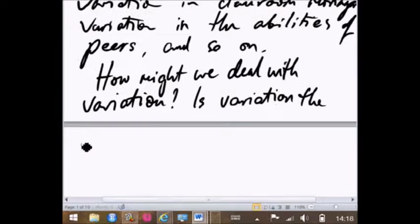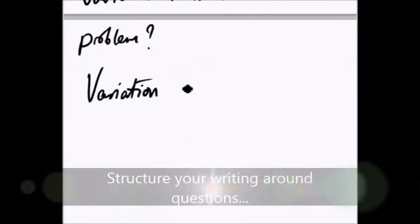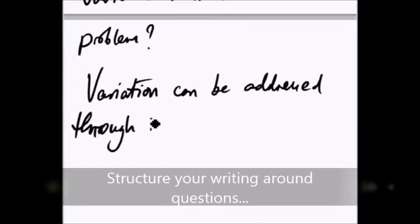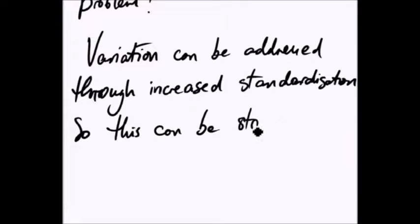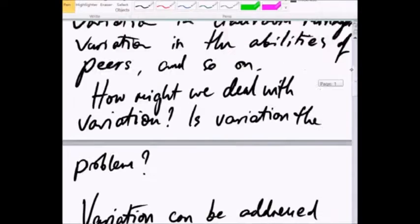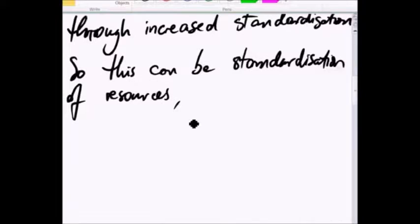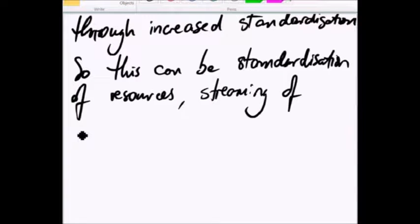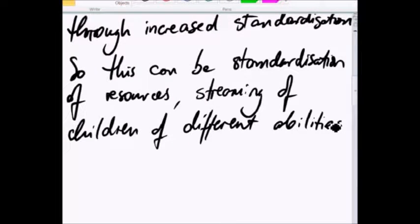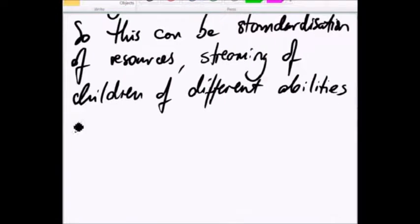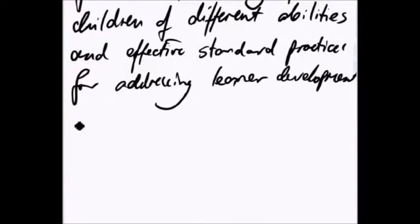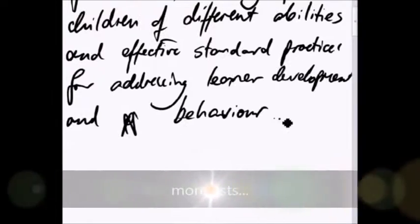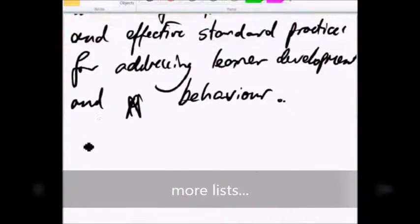Okay, so we've got another question now. I've got more to write. How can we deal with the variation problem? Variations can be addressed through increased standardization. Yes. So I know I can now get a feel, okay, so we've gone from why is education rubbish to the problem of variation, dealing with variation through standardization. So what are the kind of standardizations might I be interested in? Well, I can list these types of resources, streaming of children, different abilities. It's kind of standardizing the input. Standard practices for addressing learner development and maybe behavior. So I've got, the paragraph is kind of building up out of these lists.